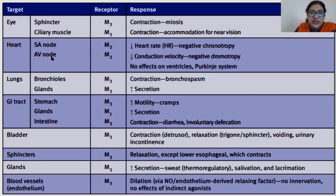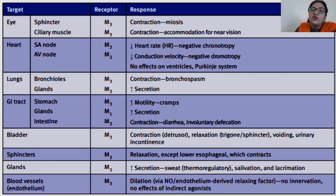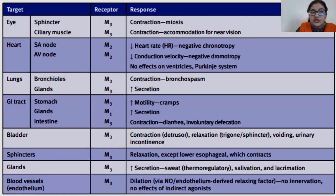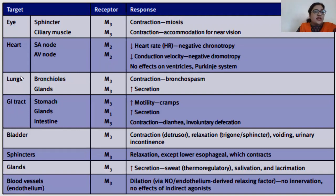Ventricles are not affected — this means the force of ventricular contraction is not controlled by the parasympathetic nervous system. M2 receptors act on the SA node and AV node to decrease heart rate — a negative chronotropic effect — and decrease conduction velocity — a negative dromotropic effect. In the lungs, bronchioles contract producing bronchospasm, and glands over-secrete, causing increased mucus secretion.